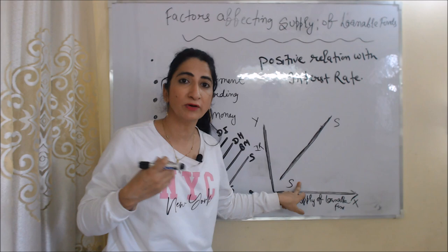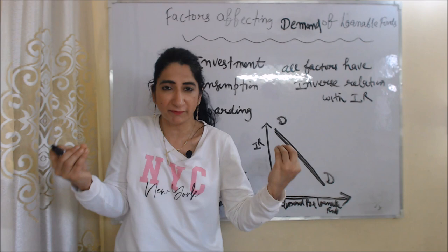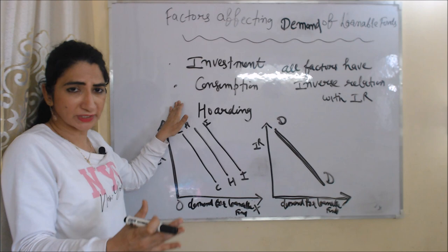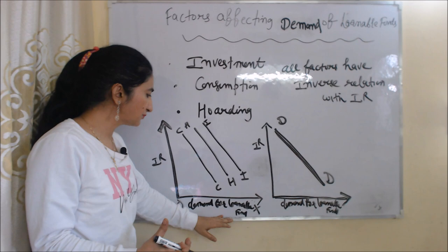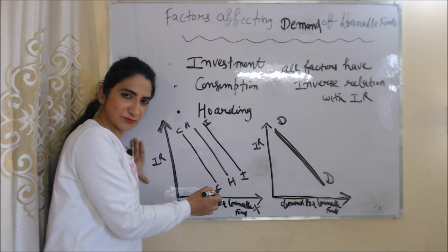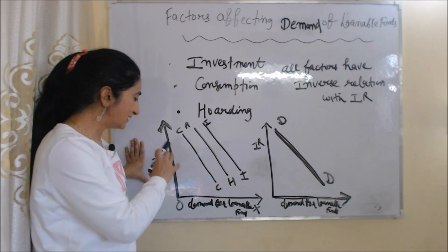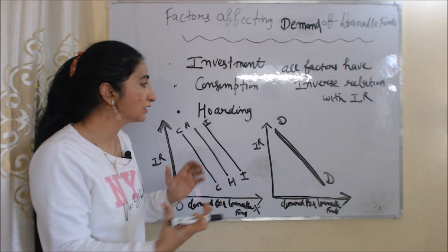All factors affecting demand for loanable funds and interest rate have an inverse relation. When interest rate is very high, people will do less demand for loans for investment, consumption, and hoarding purposes. When interest rate is very low, people will do more demand. In this diagram, on the X axis we have demand for loanable funds and on the Y axis we have interest rate. CC is the consumption curve, HH is the holding curve, and II is the investment curve. The slope of all curves is downward because of this inverse relation. When we combine all factors affecting demand for loanable funds, we get the total demand curve, represented by DD in the second diagram.